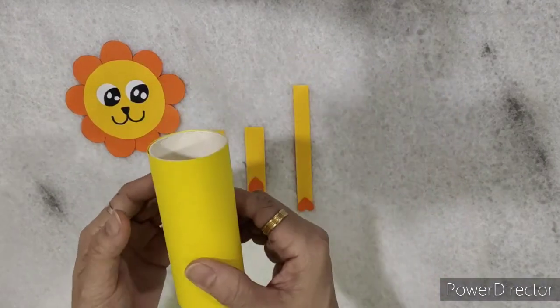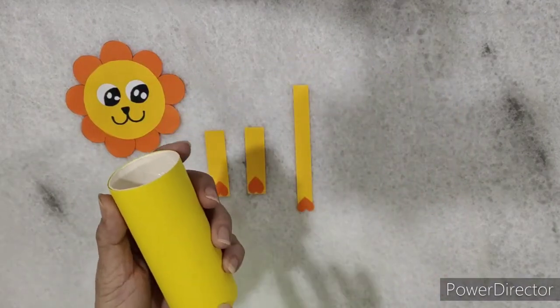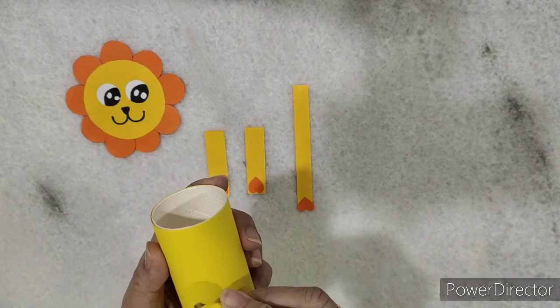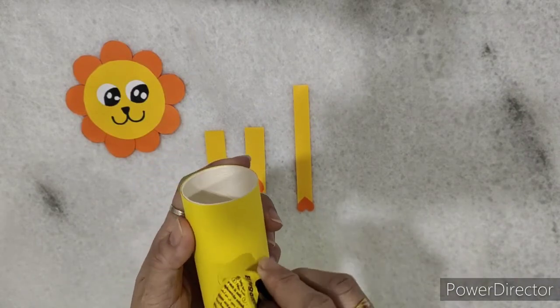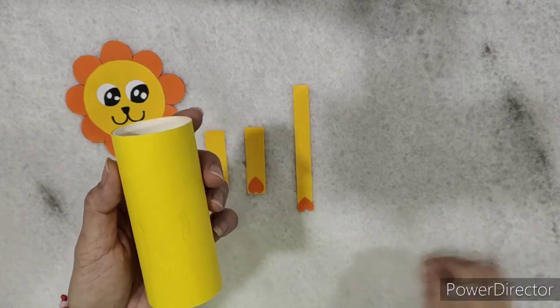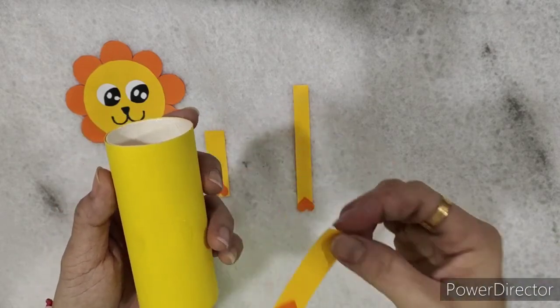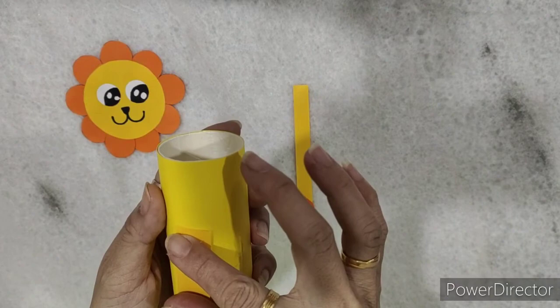Take the toilet roll and paste the legs, like this.